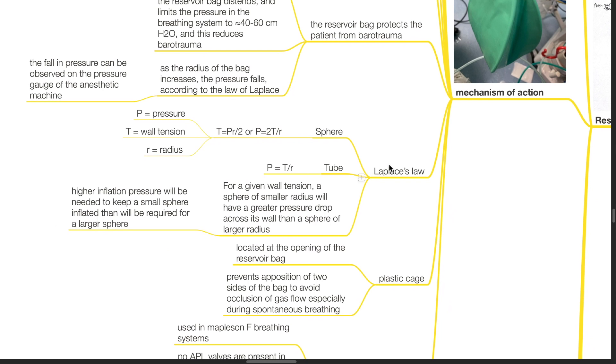Laplace law. For a sphere, wall tension equals pressure times radius divided by 2, or pressure equals 2 times wall tension divided by radius. For a tube, pressure equals wall tension divided by radius. For a given wall tension, a sphere of smaller radius will have a greater pressure drop across its wall than a sphere of larger radius. Higher inflation pressure will be needed to keep a small sphere inflated than will be required for a larger sphere.